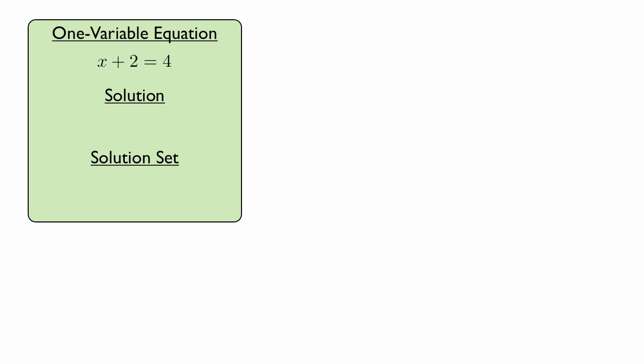In this video, we'll discuss the differences between one-variable equations and two-variable equations. This is a typical example of a one-variable equation: x plus 2 equals 4.